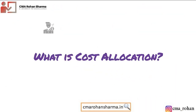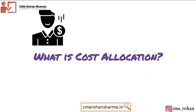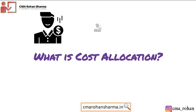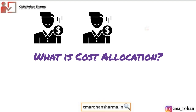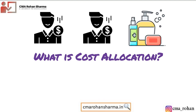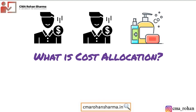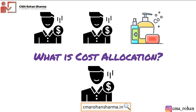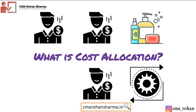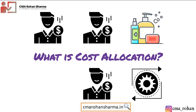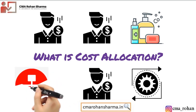What is cost allocation? When items of cost are identifiable directly with some products or departments, such costs are charged to such cost centers. This process is known as cost allocation.